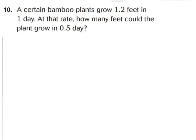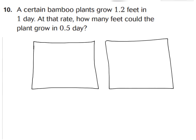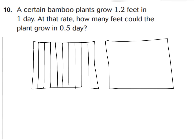For question number 10: a certain bamboo plant grows 1 and 2 tenths feet in one day. At that rate, how many feet could the plant grow in 5 tenths of a day? Remember, 5 tenths means one half, so in half a day. You don't have a model on your GoMath page, so let's draw one. Make two squares as carefully as you can. Make nine vertical lines — nine vertical lines create 10 pieces, 10 tenths. Double-check and count your strips to make sure you have ten. Then do the same thing going horizontally — make nine horizontal lines as well.